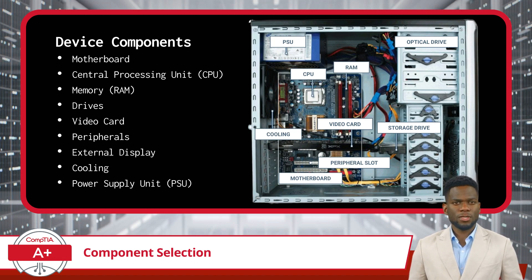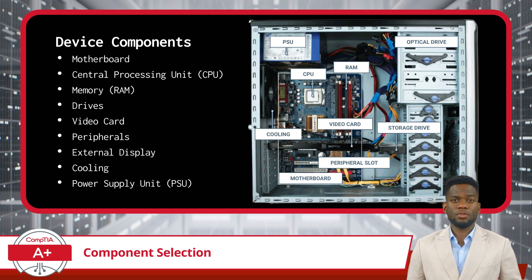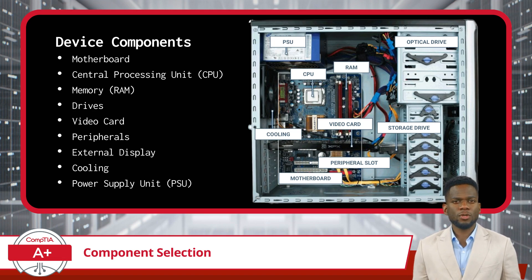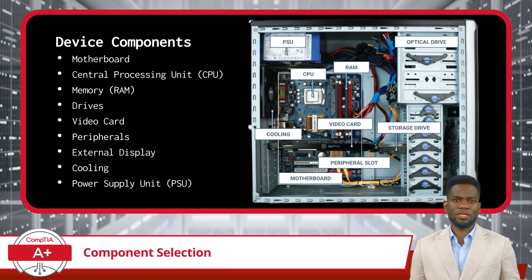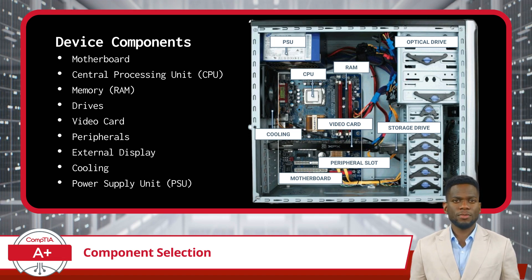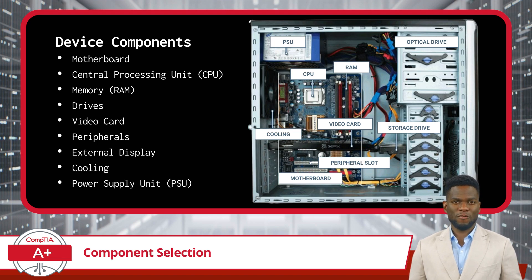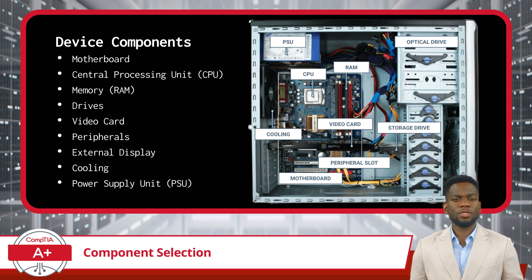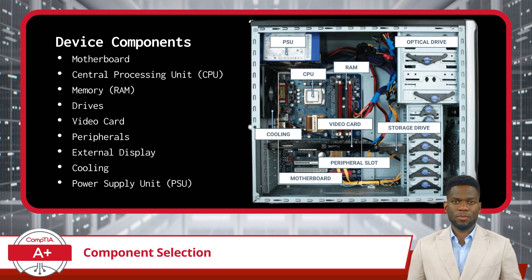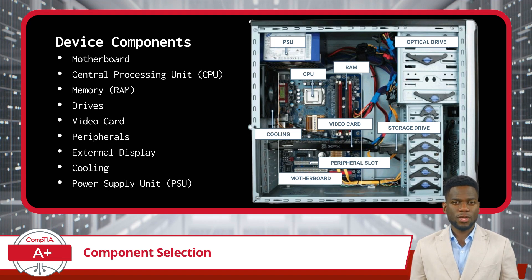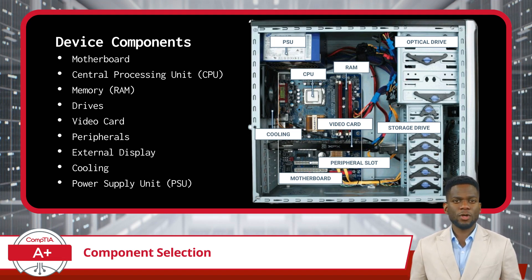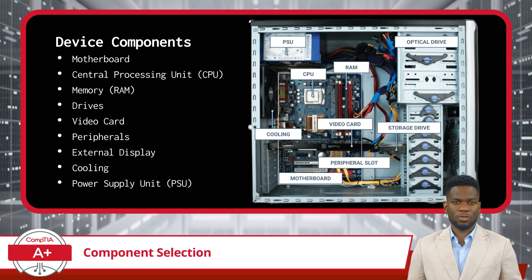Peripherals contribute to the overall user experience, with personal preferences and intended use cases guiding selection. External displays provide essential interfaces for visual tasks, with factors such as size, resolution, and connectivity impacting usability. Efficient cooling solutions are vital for maintaining optimal operating temperatures and prolonging component lifespan. A stable and reliable power supply unit is crucial for the smooth operation of the system, with factors such as wattage and efficiency influencing overall stability. Now that we can see the big picture, let's look a bit closer at each component.